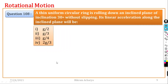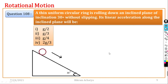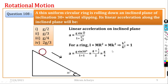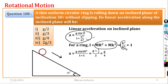Question number 108: A thin uniform circular ring rolls down an inclined plane of inclination 30° without slipping. Find its linear acceleration along the inclined plane. Using a = g sinθ / (1 + k²/R²). For a ring, k²/R² = 1, so a = g sin30° / 2 = g/4. The right answer is option number 3.